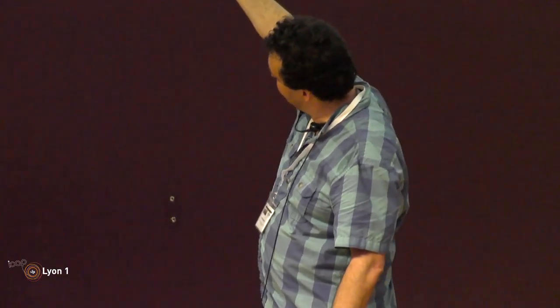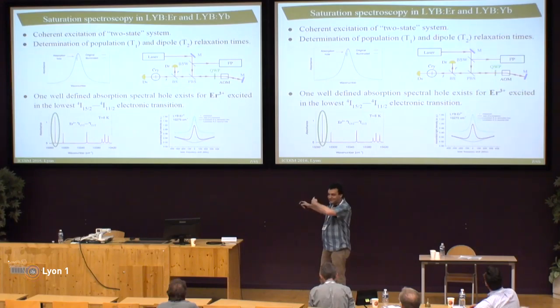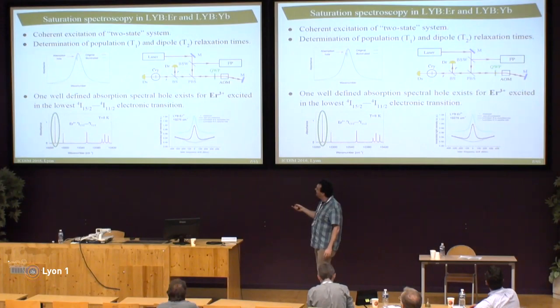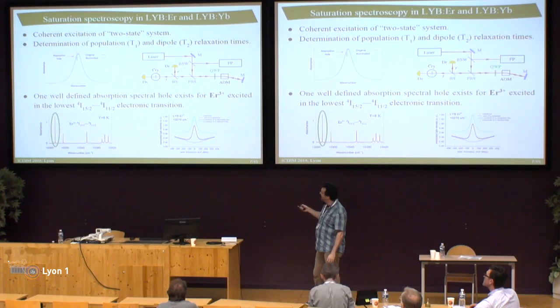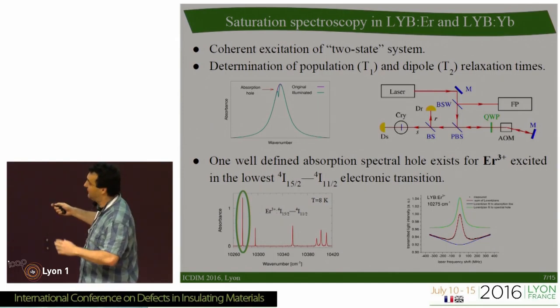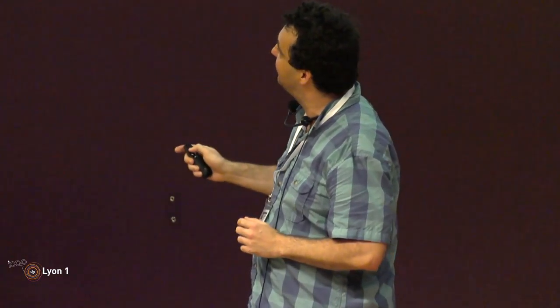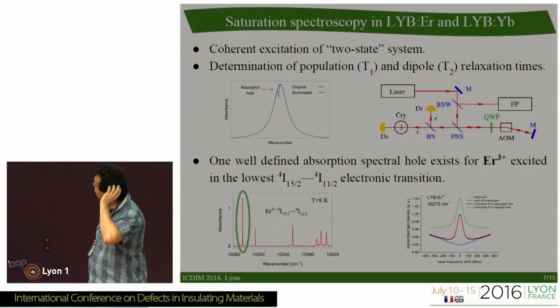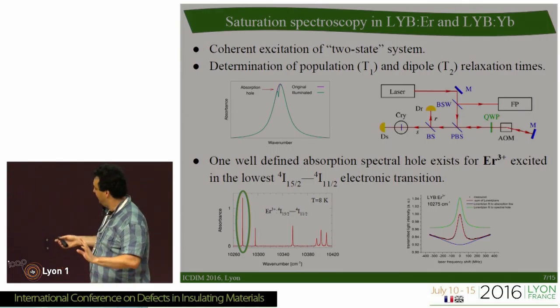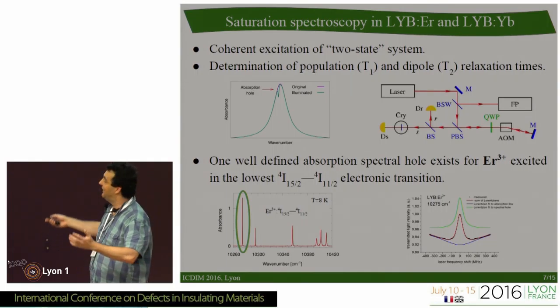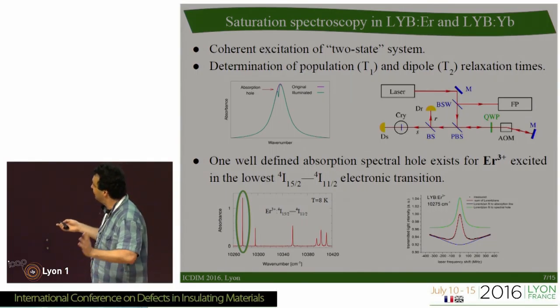The absorption hole appears inverted because this is a transmission measurement. You can see the absorption hole against the background of the fundamental absorption — the background fluorescence arises because we are near the top of the absorption band. From this we can determine the T1 population relaxation time and T2 decoherence time of these ions. For erbium, the result is straightforward: it shows normal T1 and T2 values, and that is all.